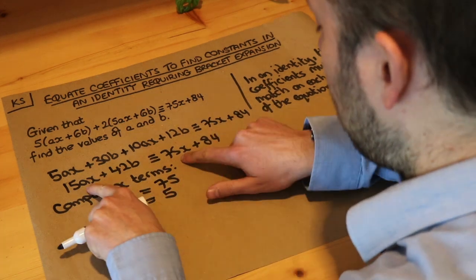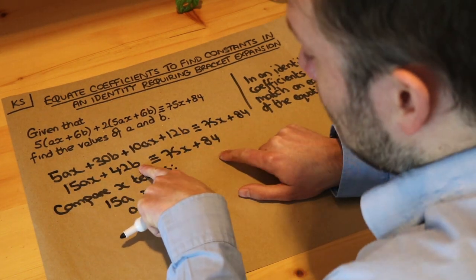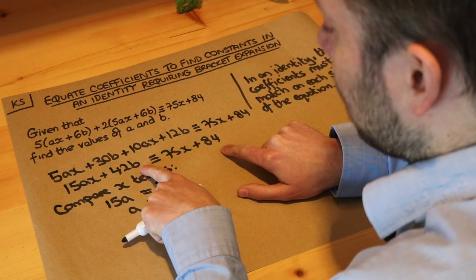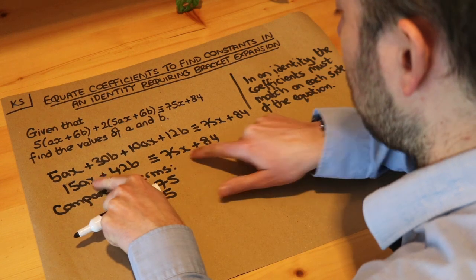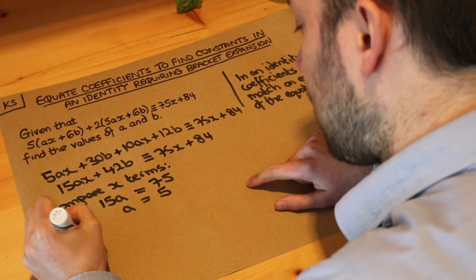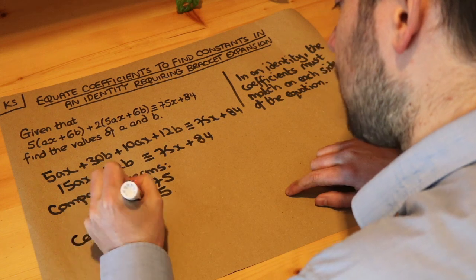Now we've compared the x terms. These terms here, they don't involve variables. The b here is a constant, which means it doesn't change, it's fixed in value, whereas the x could vary, so that's a variable. So these are the constant terms, and let's compare the constant terms, the non-x terms.